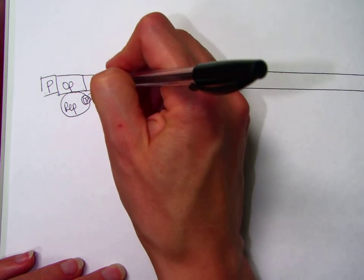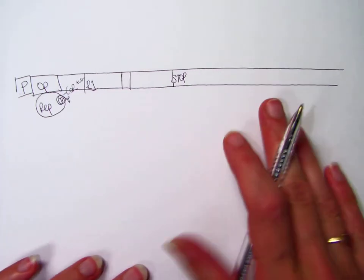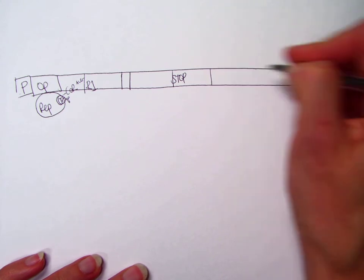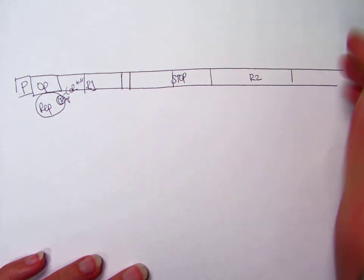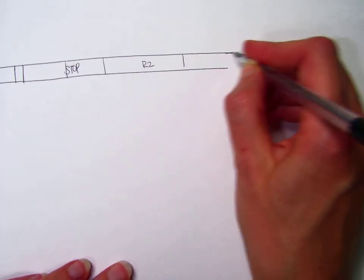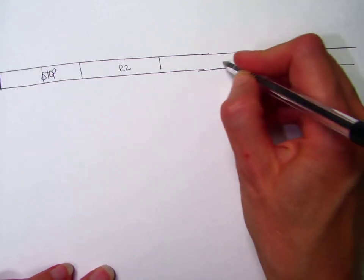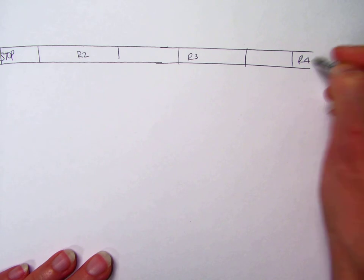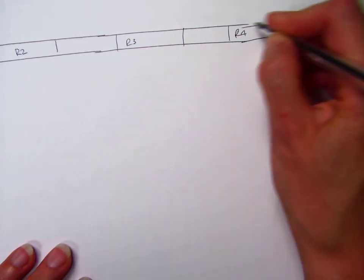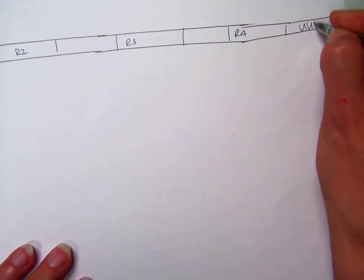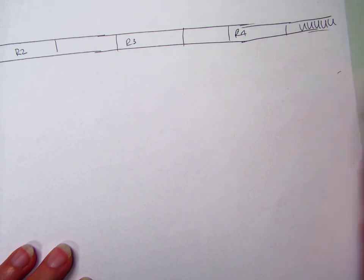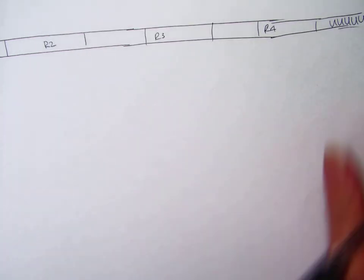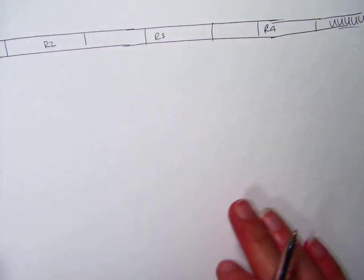So then after region 1 is region 2, and then we've got region 3, region 4, and then after region 4 is the poly-U. And then the rest of the operon is over there, over here somewhere.